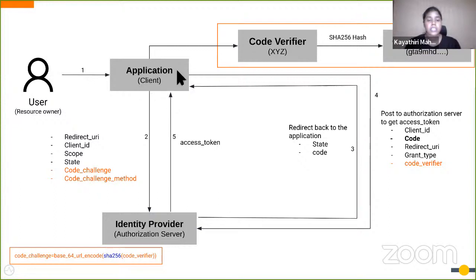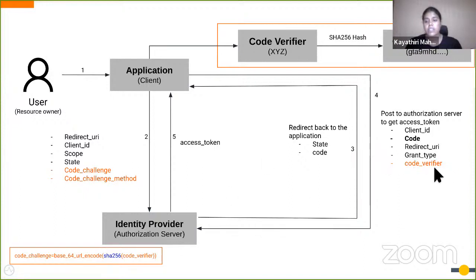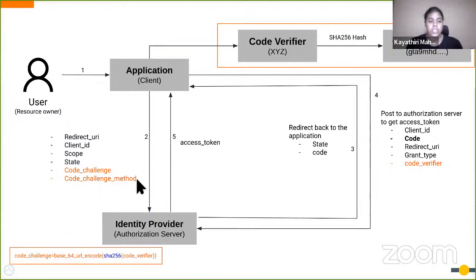Now the client application can exchange the code for a token. When sending the request to the token endpoint, it includes the client ID, code, redirect URI, and grant type — without the client secret since it's a public client. In addition, it sends the code verifier. When the request reaches the identity provider, it validates the authorization code and additionally validates the code verifier. The identity provider regenerates the code challenge based on the code challenge method and the code verifier it has. Once the regenerated code challenge matches the already-sent code challenge value, it sends the access token back to the application.